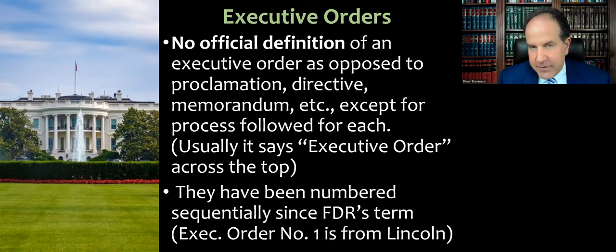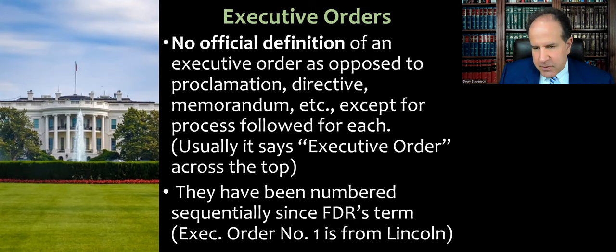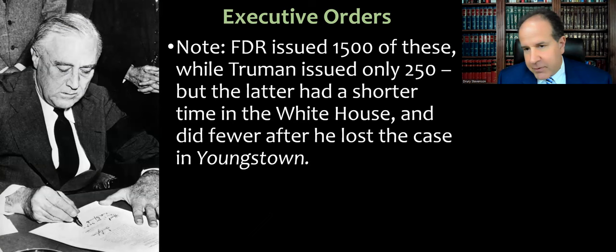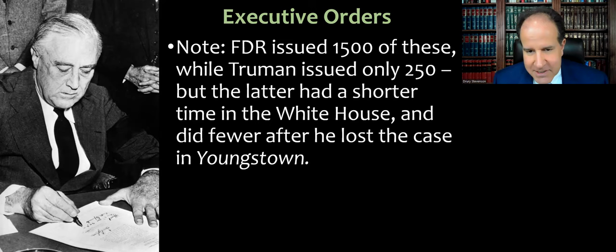They decided to start tracking them, and what they did to come up with a number is they went backwards and started with Lincoln for number one. So executive order number one is from Lincoln. By the time we get to President Reagan's presidency in the 80s, we're up to the 12,000s. FDR himself issued around 1,500 executive orders, while Harry Truman, his successor, issued only about 250. But remember, the latter was not in the White House nearly as long as Roosevelt was. Also, he had a bad experience with an executive order in the Youngstown Tube and Steel case — the Supreme Court ruled against him, and after that he did not issue as many executive orders.